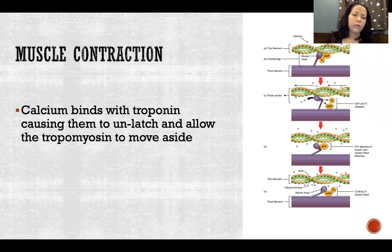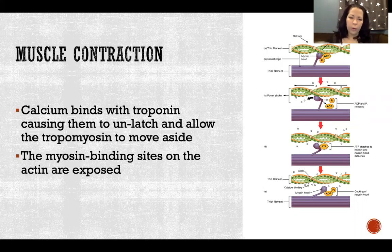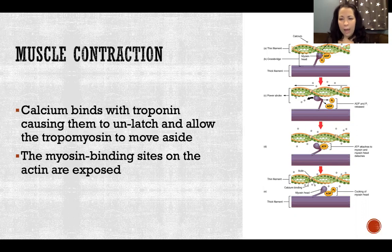The calcium binds with the troponin — the little latches — and causes them to unlatch, allowing the tropomyosin to move aside, which exposes the myosin binding sites. Whenever the myosin binding sites are exposed, the myosin heads will grab on and form cross bridges.